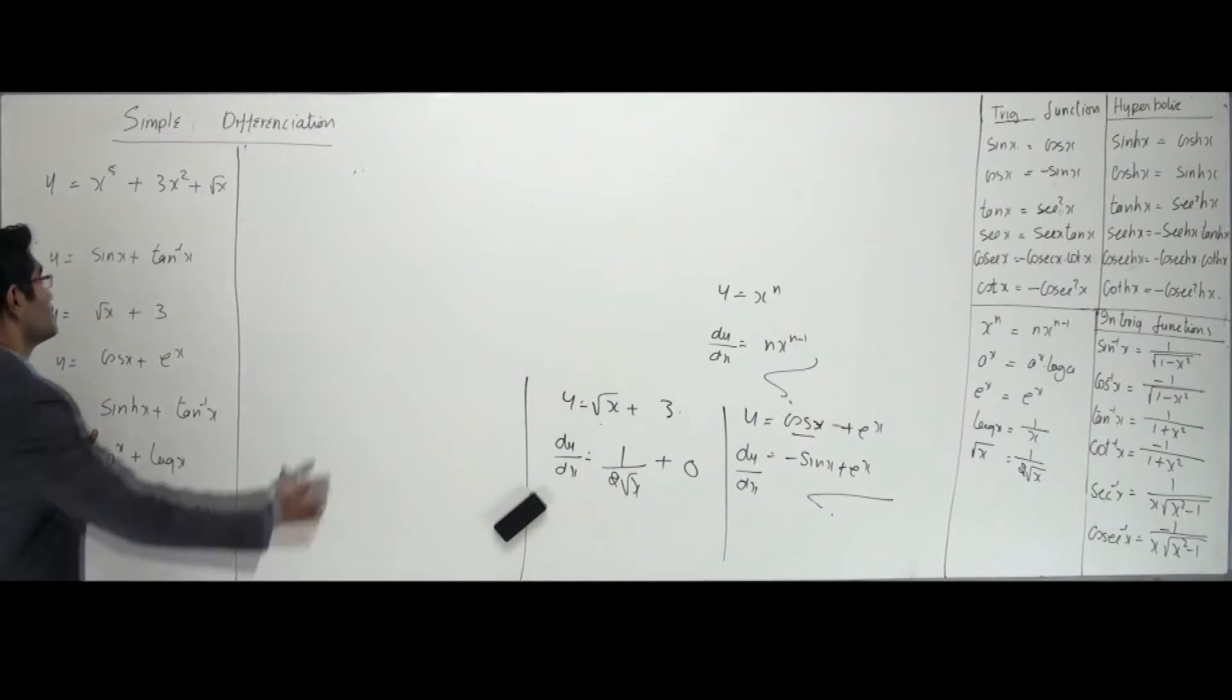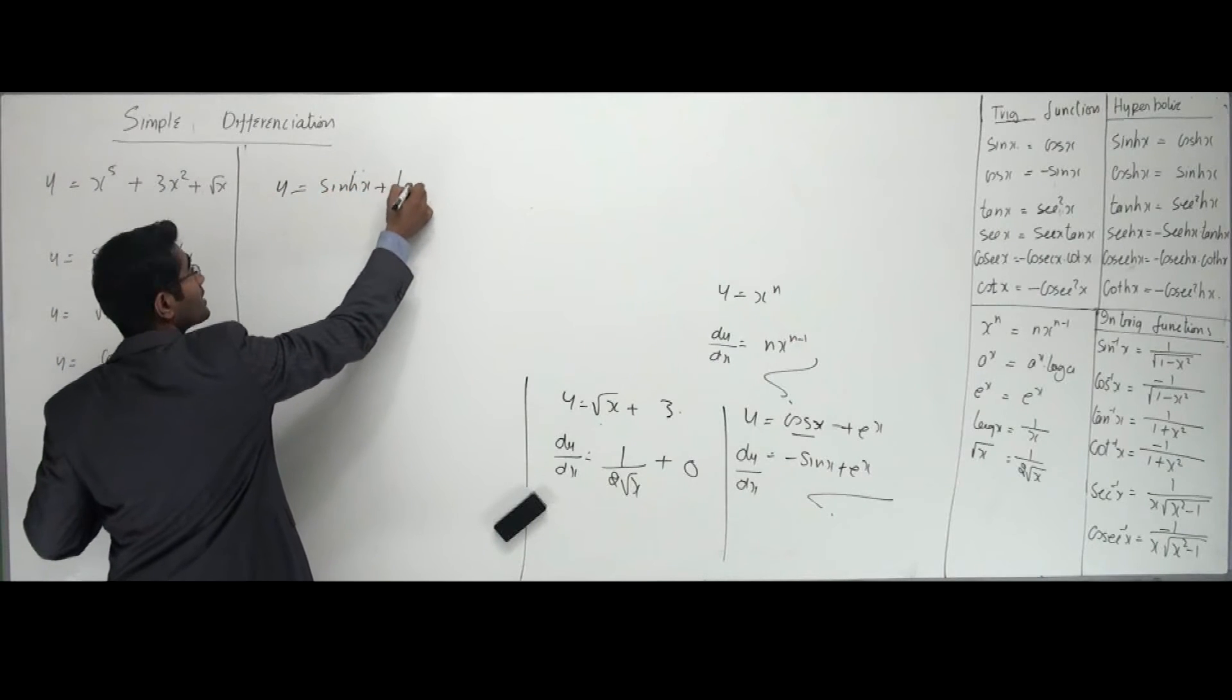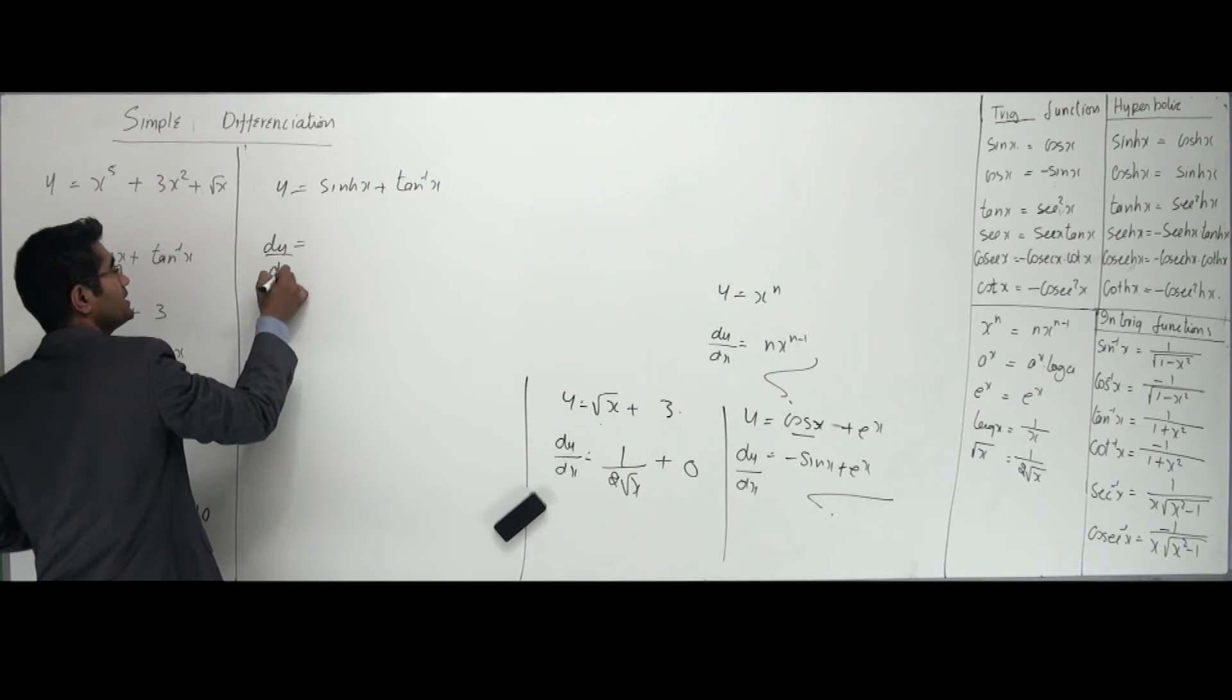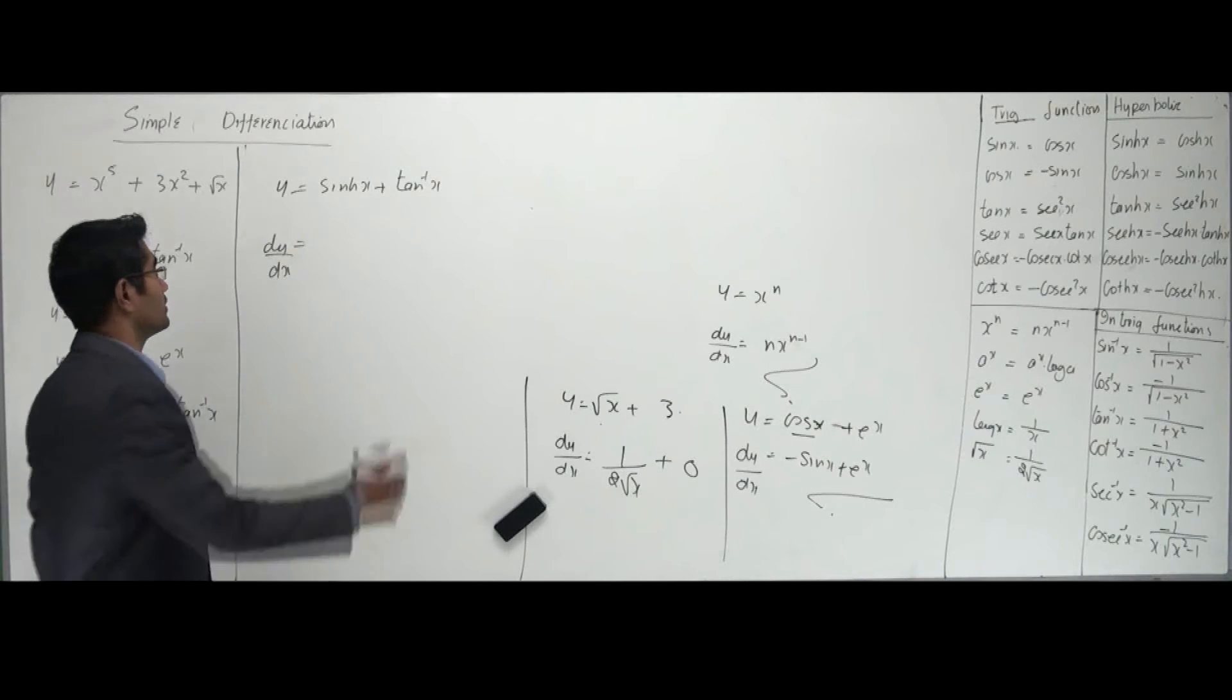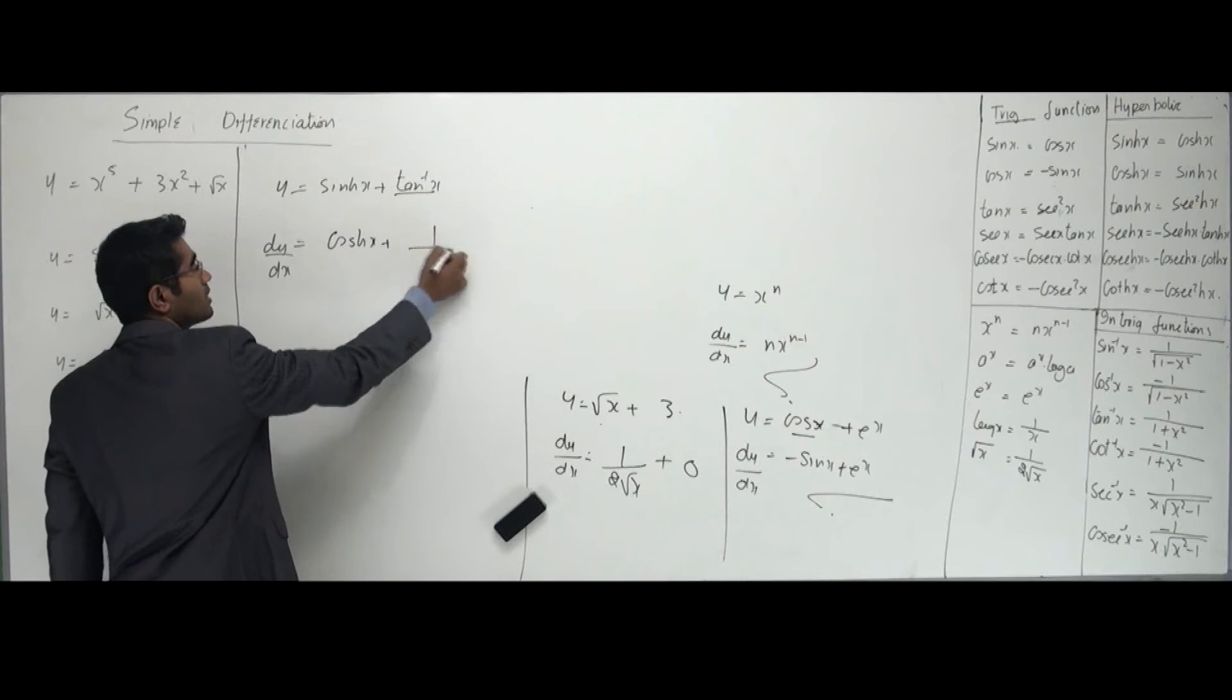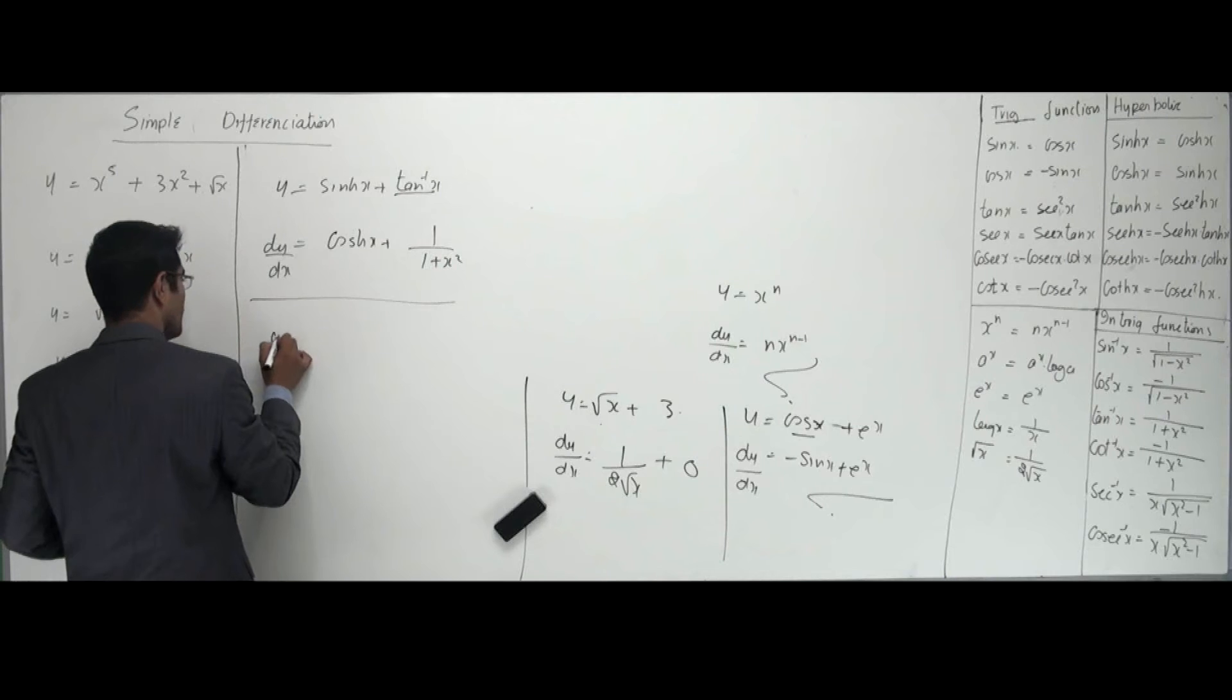The next problem: y equals sinh x plus tan inverse of x. You guys can do it yourself if you know it. It's pretty easy. Just know the formula and write the answer. sinh x: derivative is cosh x. Plus tan inverse of x is again 1 over 1 plus x squared.